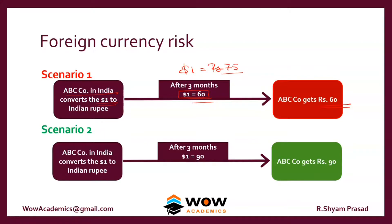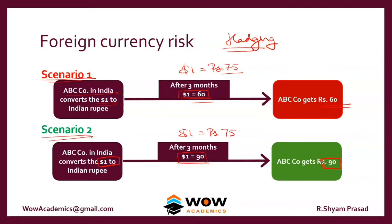In scenario two, when the US company pays the one dollar after three months, the rate has moved to 90 rupees per dollar. The company gets 90 rupees instead of the expected 75 — an additional profit of 15 rupees. Since we never know which scenario will play out, companies try to avoid this transaction risk through a mechanism called hedging.